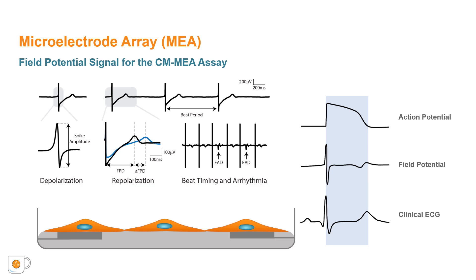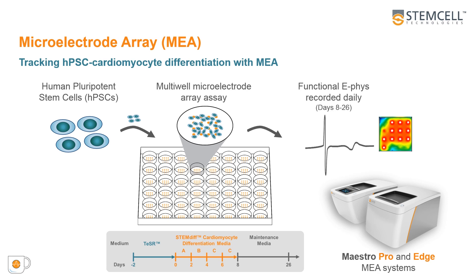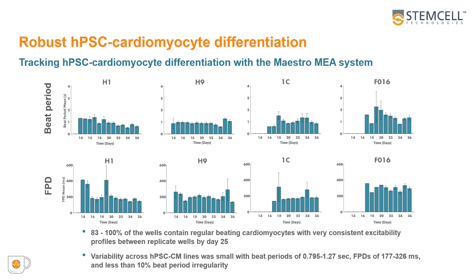We use the microelectrode array system to track the performance of HPSC differentiation to cardiomyocytes. Using a 48-well Cytoview plate, we seeded down human pluripotent stem cells into each well of the plate. We then differentiated those cells and tracked excitability in real time from days 8 to 26 of the differentiation and maintenance protocol. Using our STEMdiff cardiomyocyte differentiation kit, we observed the onset of consistent excitability metrics at day 14.